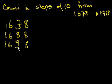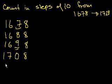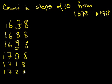So instead of incrementing the tens place and getting 10 there, we increment the hundreds place. So we get 1,700. We used all of those tens plus one more to get that extra 100. So now we have 0 tens and 8 ones — it's 1,708. From here it's straightforward: we keep incrementing the tens place — 1,718, 1,728. That's where we wanted to go — we're done!